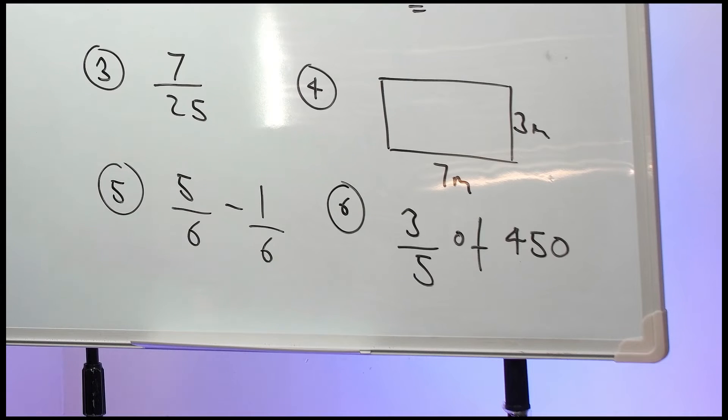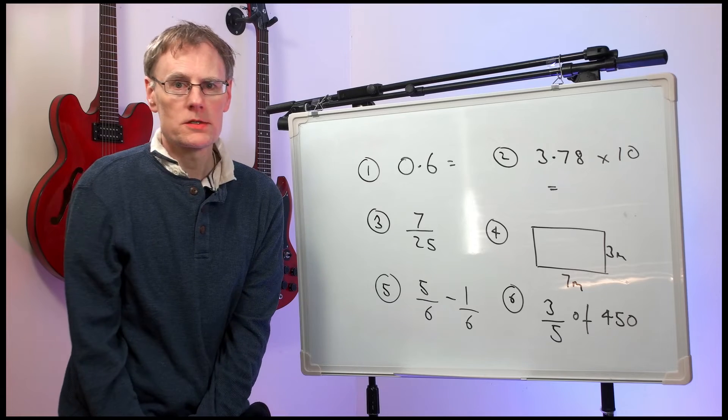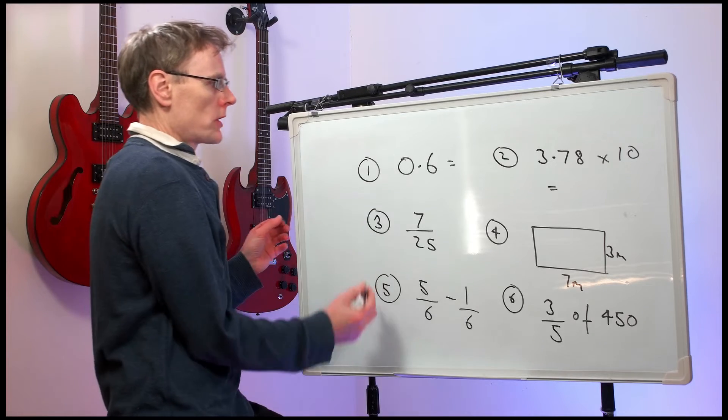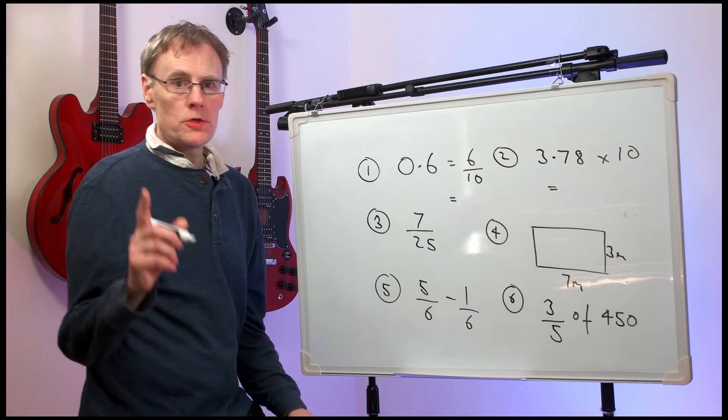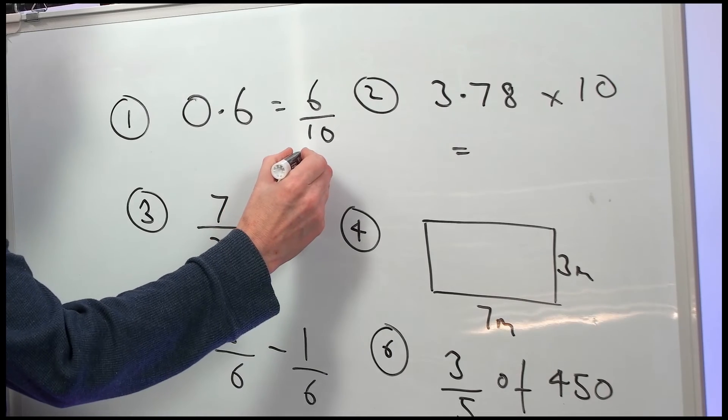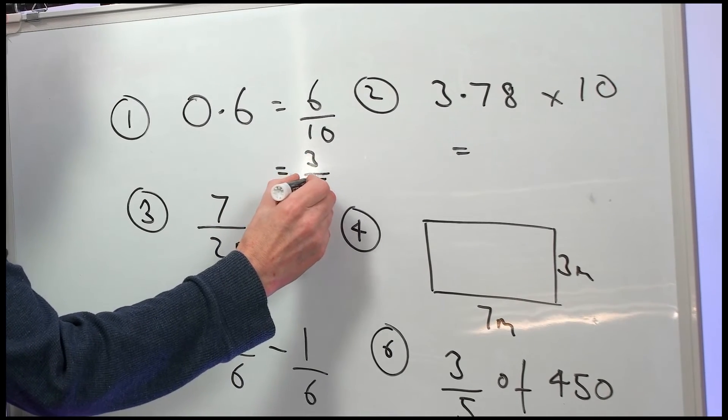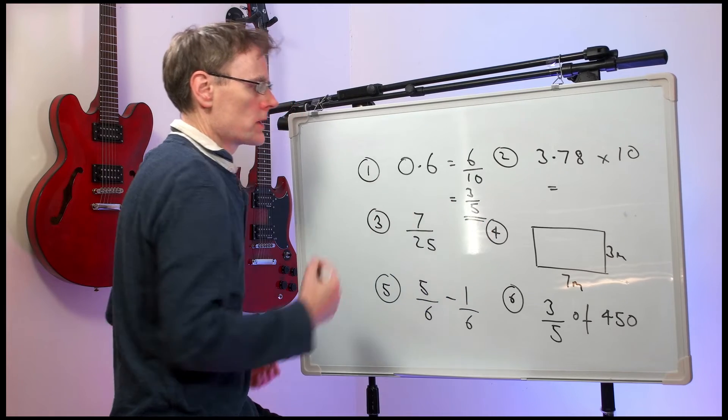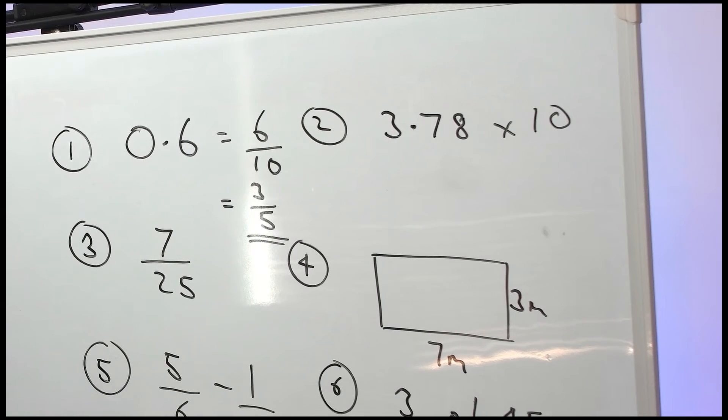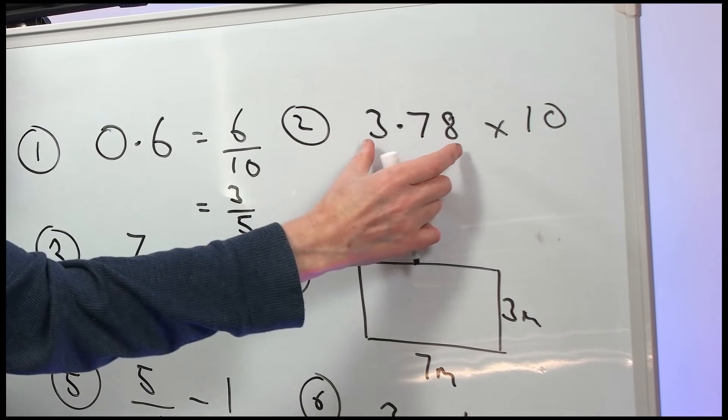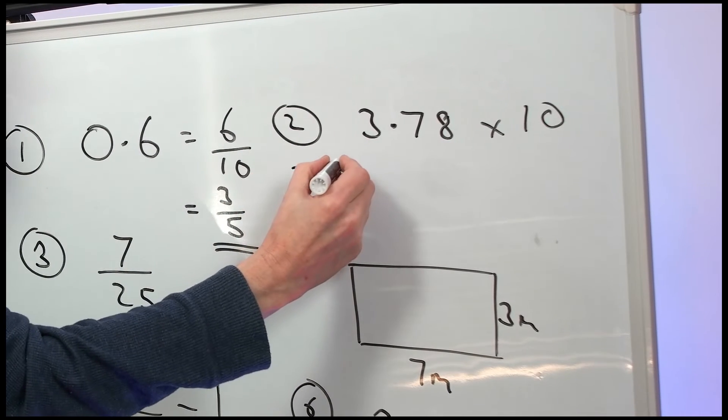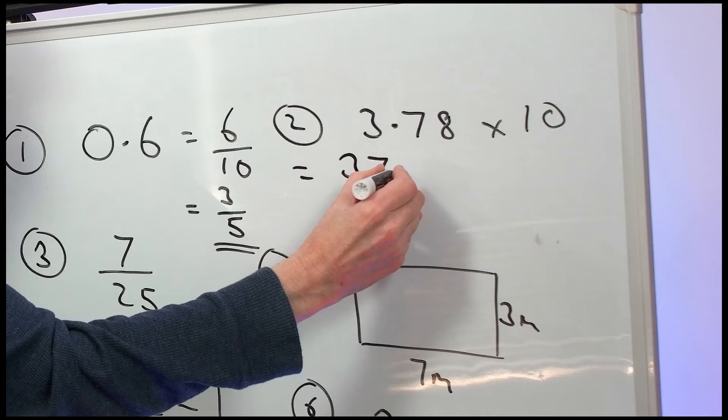3.78 times 10. Well, all the numbers move up one column to become 37.8.